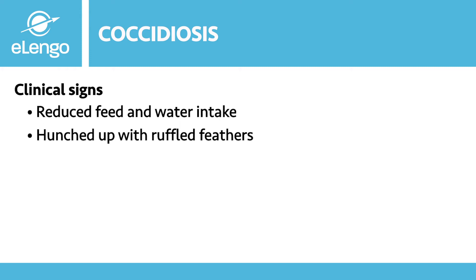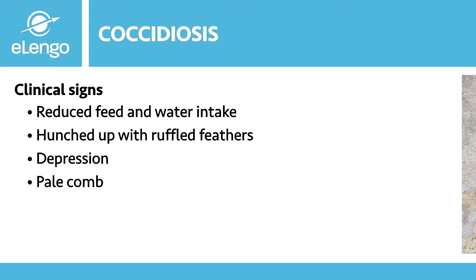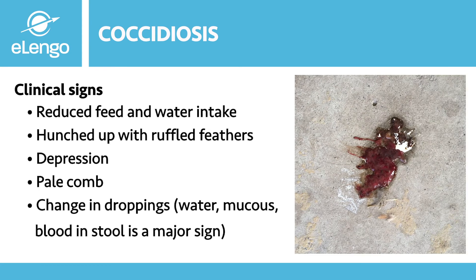The birds will appear hunched up with ruffled feathers, and will also look depressed, pale, with loss of condition and stunted growth. The other key sign to observe is a change in their droppings — in the appearance and color — going from watery to having mucus and then becoming reddish or red in color.